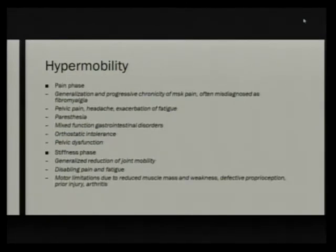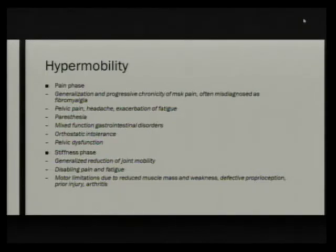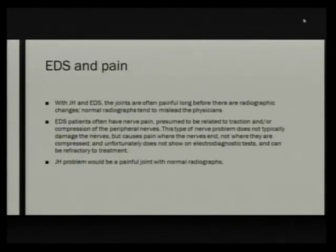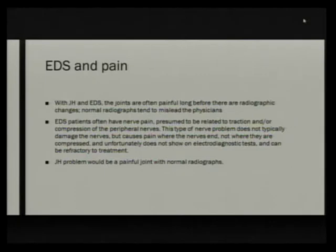Next is the pain phase, where you get generalized and progressive musculoskeletal pain, sometimes misdiagnosed as fibromyalgia, pelvic pain, headaches, paresthesias, mixed GI disorders, and orthostatic intolerance. Then they get the stiffness phase, where they may no longer meet Beighton criteria because of all these traumas leading to early-onset arthritis, and more disabling pain and fatigue. They have significant pain before any evidence on x-rays — significant joint pain with normal radiographs is suggestive. They also have nerve pain that doesn't show up on electrodiagnostic testing, thought to be due to very small microfibers.